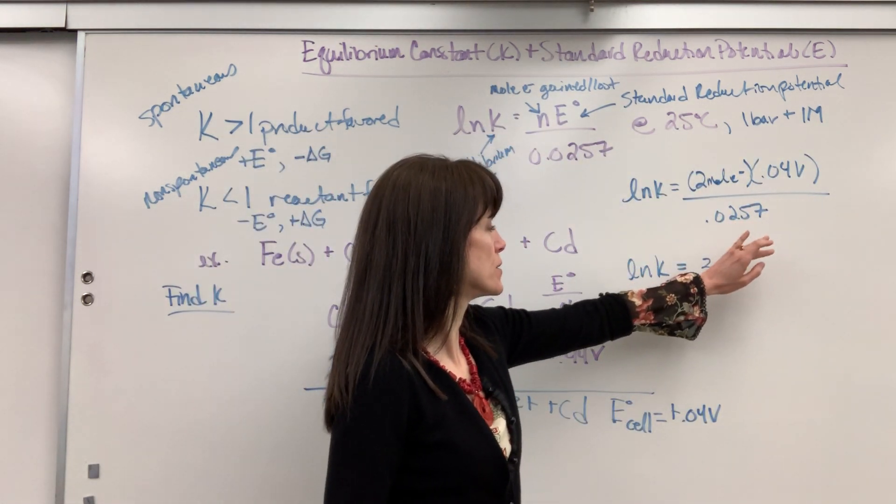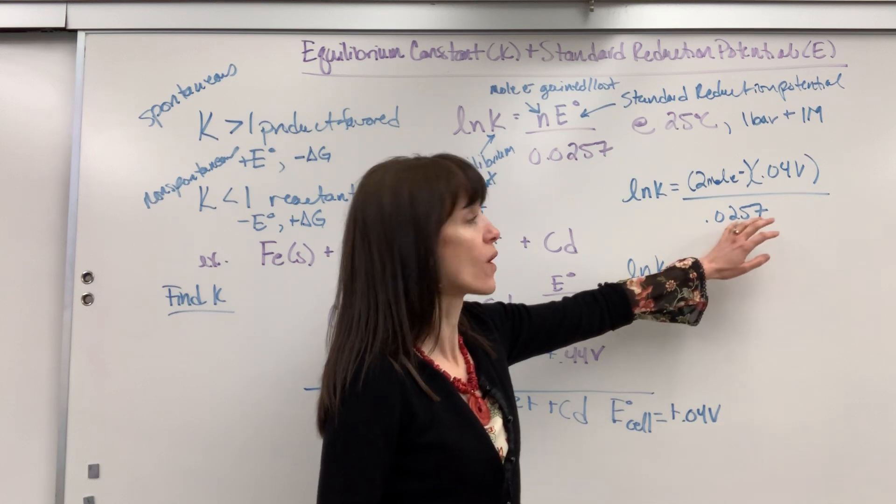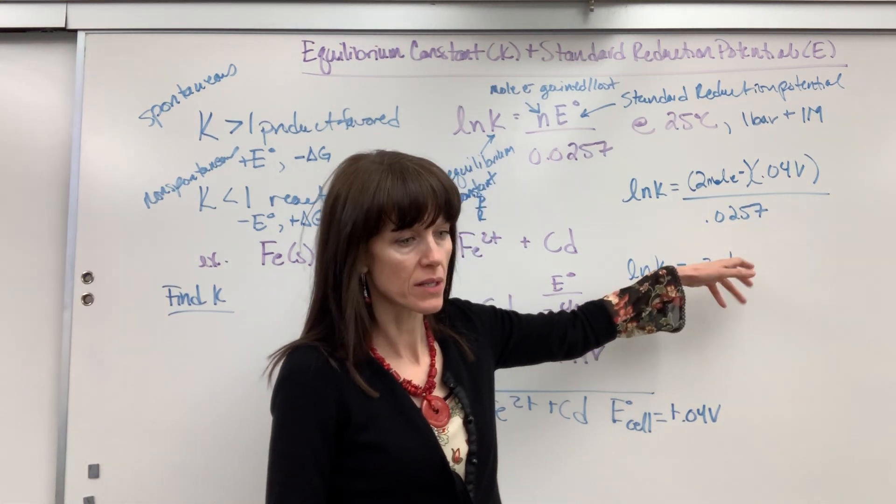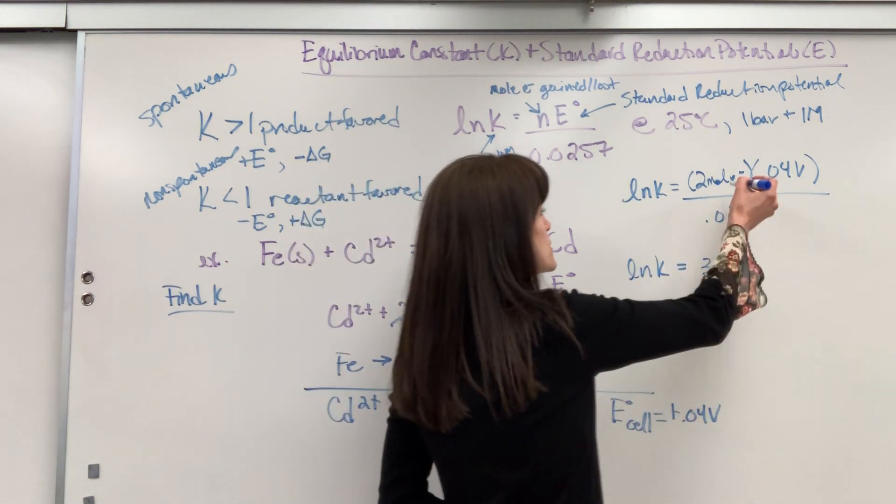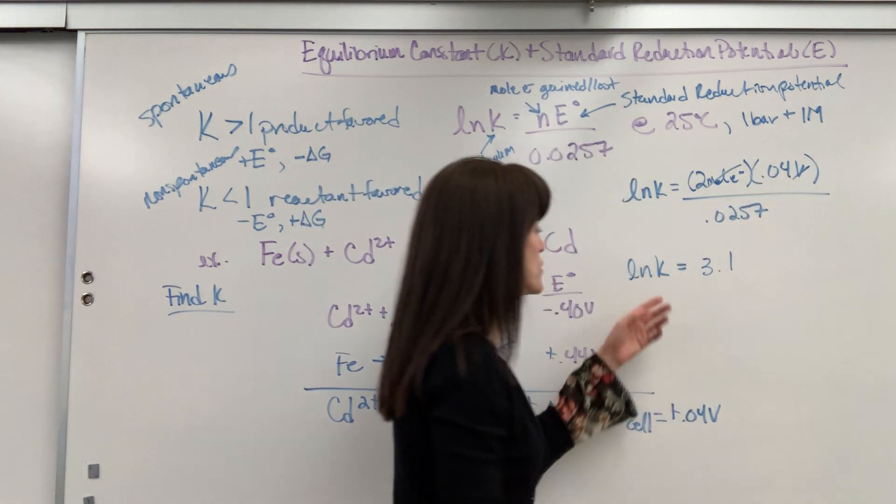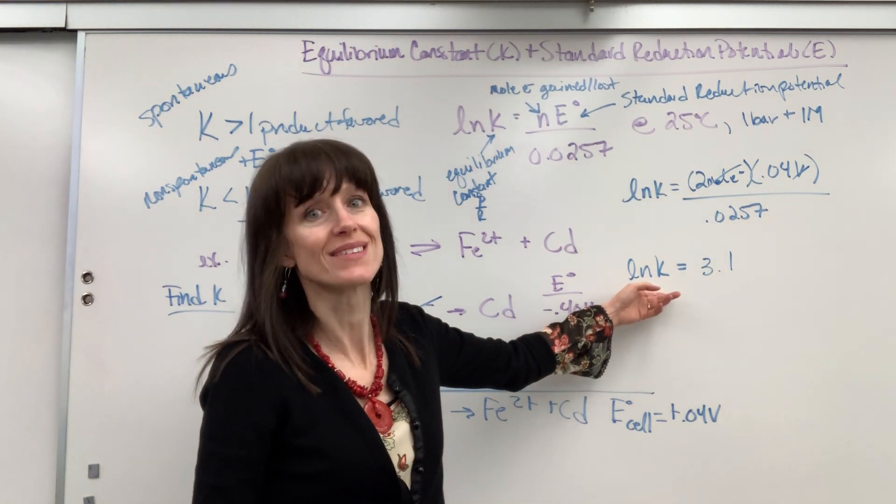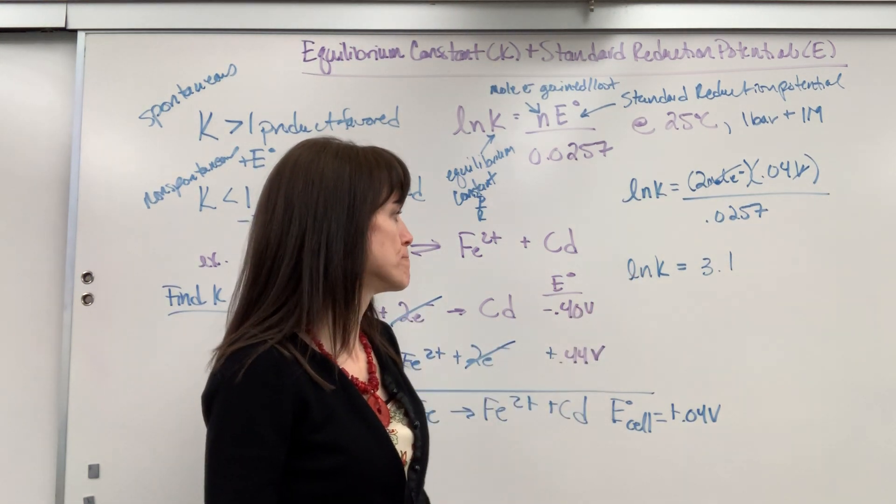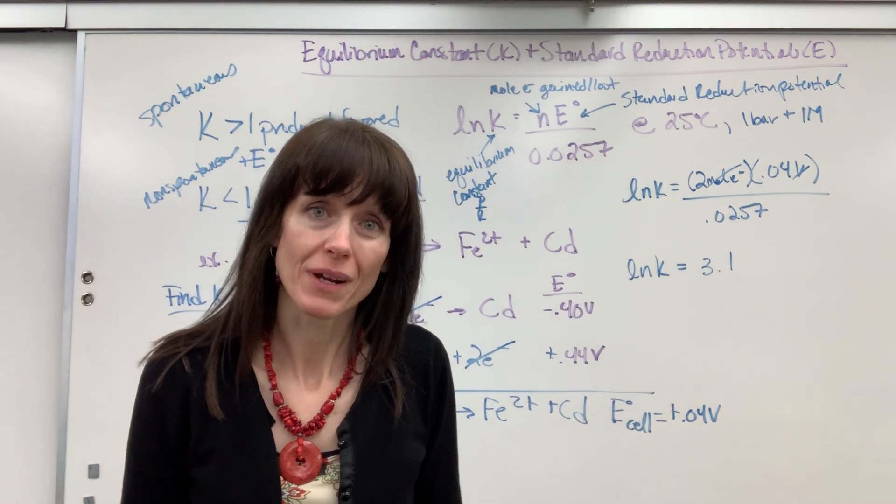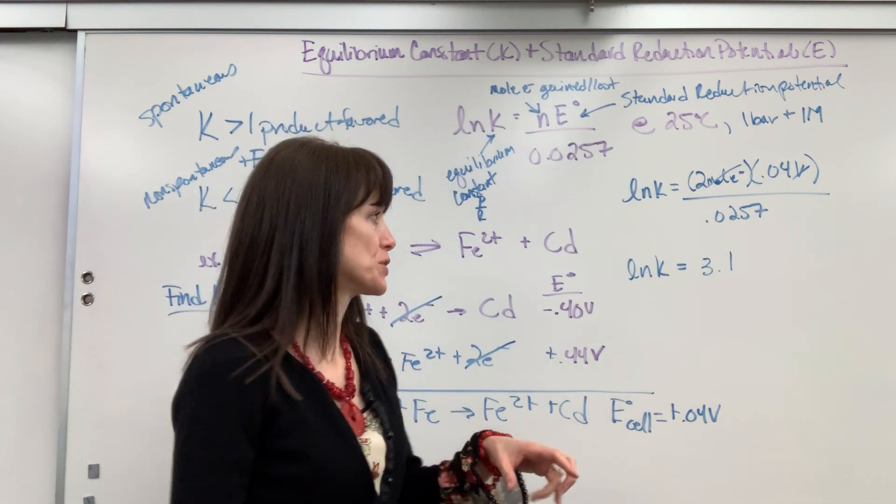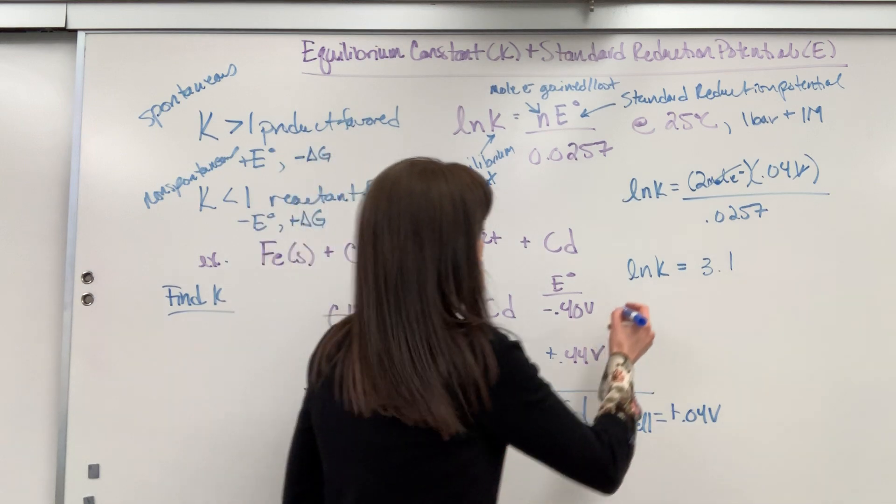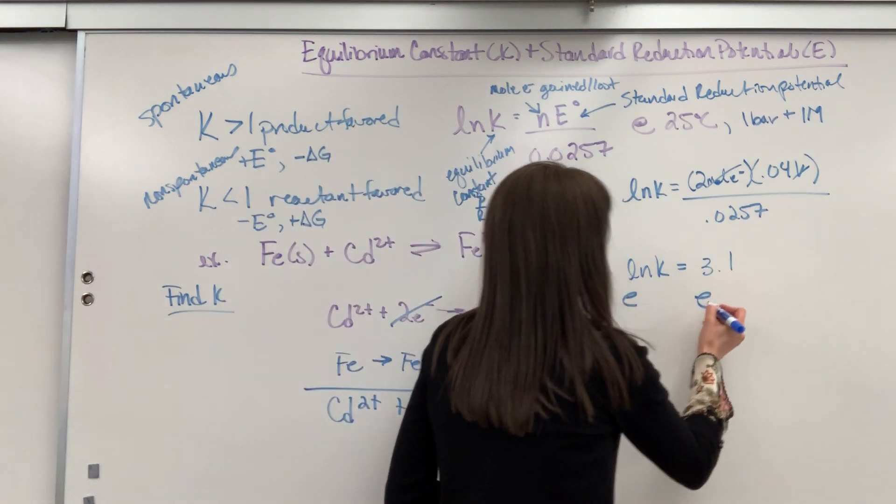This right here involves a couple of constants. Gas constant, Faraday's constant. Trust me on this. Just know that those units cancel and you'll end up with something that's unitless. K is unitless. Now, a little reminder from algebra. How do we get rid of a natural log? How do we undo it? It's the e. I'm going to raise both sides to the e.